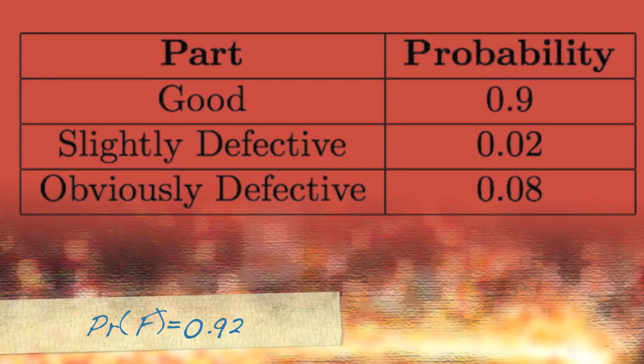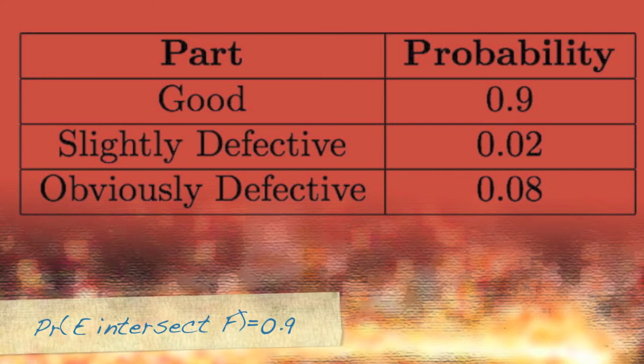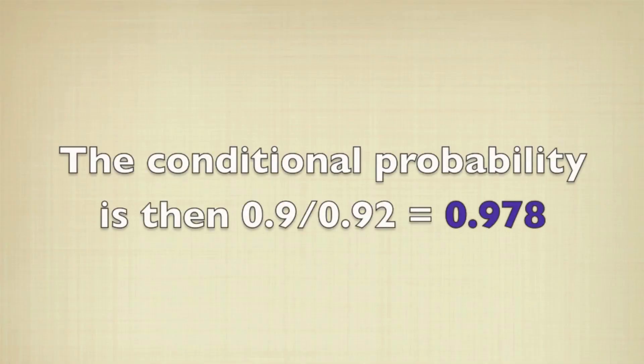So looking at this table, the probability that the part that we have is not obviously defective is 0.92. It's the good and slightly defective parts. The probability that it's good, given that it's either good or slightly defective, is going to be 0.9, the same as the probability that it's just good. If we put those parts together, the conditional probability is 0.9 over 0.92, which is 0.978.